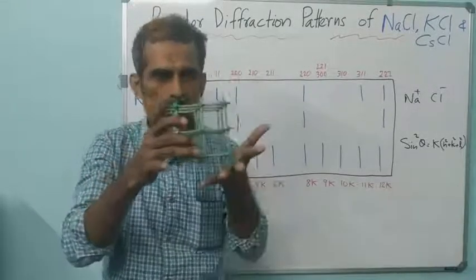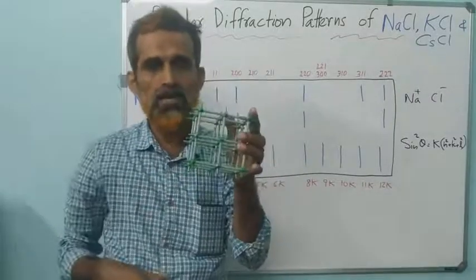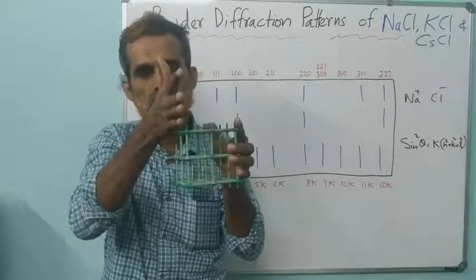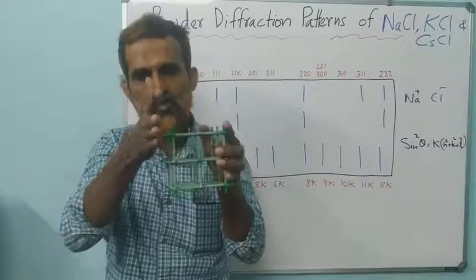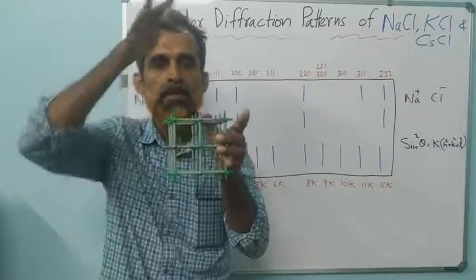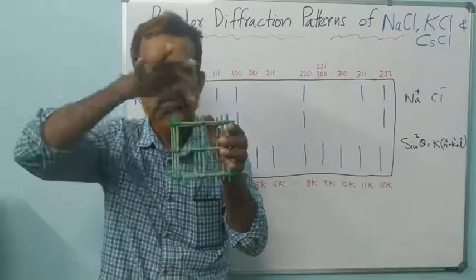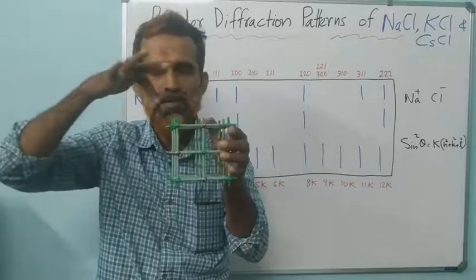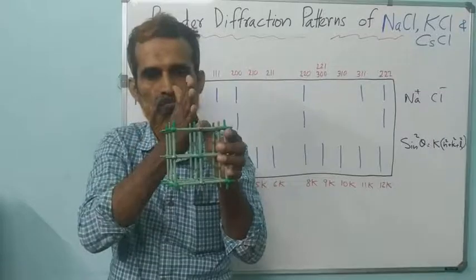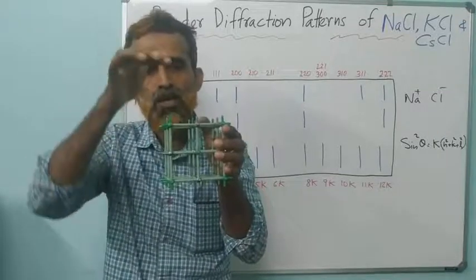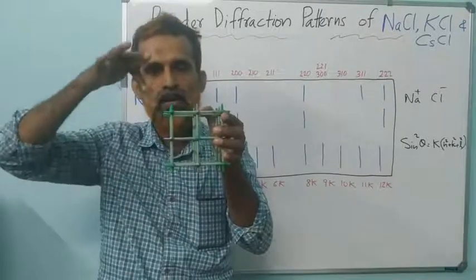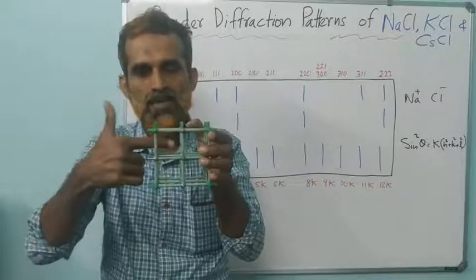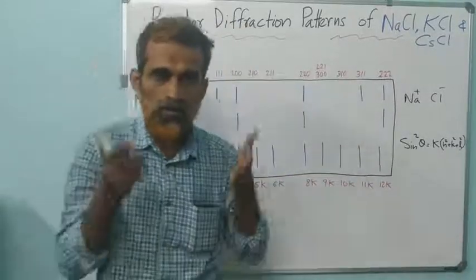This is only one unit cell of NaCl, and of course there are many unit cells all around the crystal. If you extend this unit cell — considering the next unit cell — Cl⁻ and Na⁺ come alternately. Considering half from this unit cell and half from the next, you will see Na⁺ ions at the eight corners and also at all the face centers. That means Na⁺ is also in FCC arrangement.